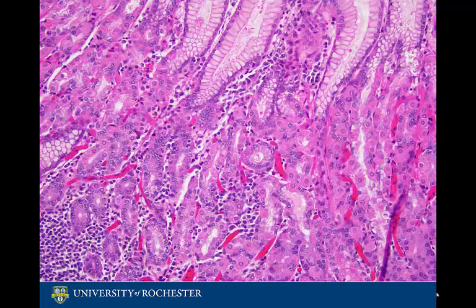There are four major cell types in the mucosa layer of the stomach: surface mucus cells, parietal cells, chief cells, and enteroendocrine cells.